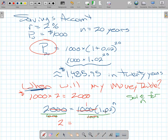1,000 divided by 1,000 cancels. Gives me a 1. 1 times anything is itself. So on the other side, I just have 1.02 to the power N.